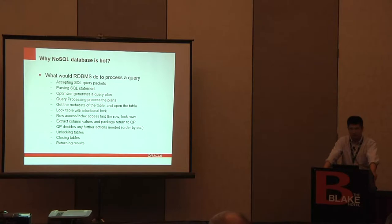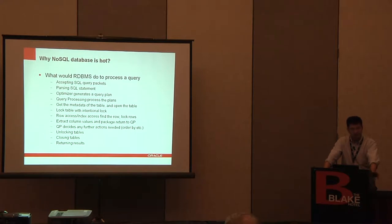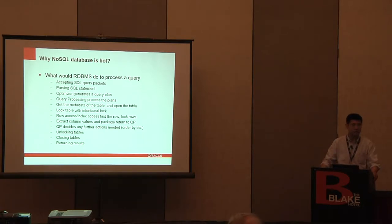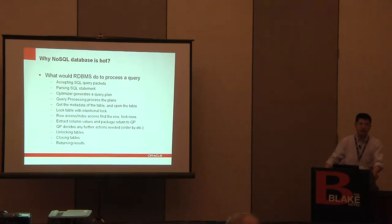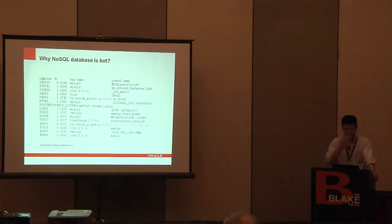Because we support all kinds of transactional queries, we have to lock the table, use the index for the row, lock the rows, extract the column, package it, and return to the query processing layer. Then the query processing layer decides whether it needs to do a further action — whether it needs to be ordered by or sorted. Then it unlocks the table, closes the table, and returns the result. That's a whole lot of things needed for each query, even if you just want to do a simple select from a user table where name ID is 10.